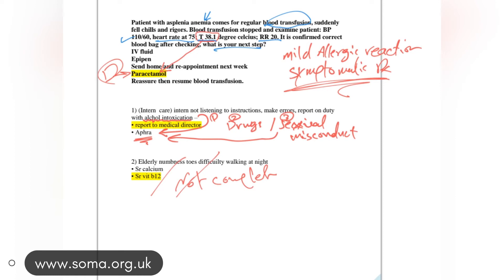An intern who is not listening to instructions, makes errors, reports on duty with alcohol intoxication. What to do - report to medical director or tell AHPRA? Look, there are three conditions for people who are working with patients directly, like doctors and nurses. You have to inform AHPRA if those who are taking alcohol as intoxication, who are taking drugs, medications, drugs, and who are sexual misconduct.